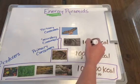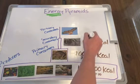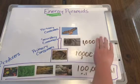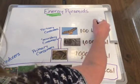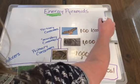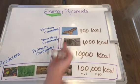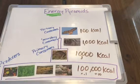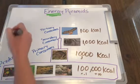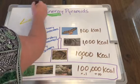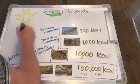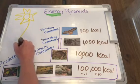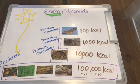Then we move up one more level, divide it by 10, and we're down to 1,000 kilocalories. Move up one more level and divide by 10, and we're down to 100 kilocalories of energy available to the top level. And of course, where does all this energy come from? All of this energy is originally coming from the sun. The sun is feeding this whole thing.